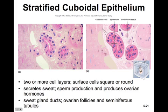Stratified cuboidal epithelium is characterized by two or more cell layers with round or square surface cells. It often secretes sweat, and in the testes it is involved in sperm production, while also producing ovarian hormones. It is found in sweat gland ducts, ovarian follicles, and seminiferous tubules.